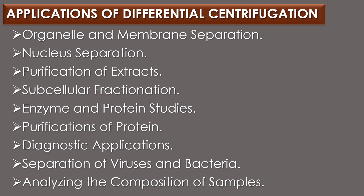The fifth application is enzyme and protein studies: differential centrifugation can be applied to separate enzymes and proteins based on their subcellular localization. By isolating specific organelles or subcellular fractions, researchers can investigate the distribution, activity, and regulation of enzymes and proteins within different cellular compartments. The sixth application is purification of proteins: differential centrifugation can be used to separate proteins based on their size and shape, allowing researchers to purify specific proteins for further study.